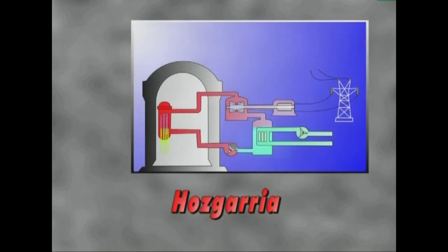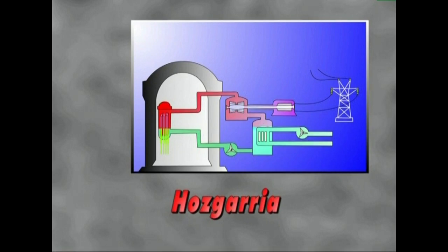Fisioan askatzen den beroenergia surgatzen duen gaiada, osgarria. Osgarria zirkuitu itxian dabilen fluidoa da. Beroa surgatu ondoren, osgarriak gehienetan bero trukagailuaren bitartez, beste zirkuitu bateko fluido bati, normalean urari, transmititzen dio bere beroa. Ondorioz, ura lurrundu eta lurruna sorgailu bati eragiten dion lurrunturbinara bideratzen da.